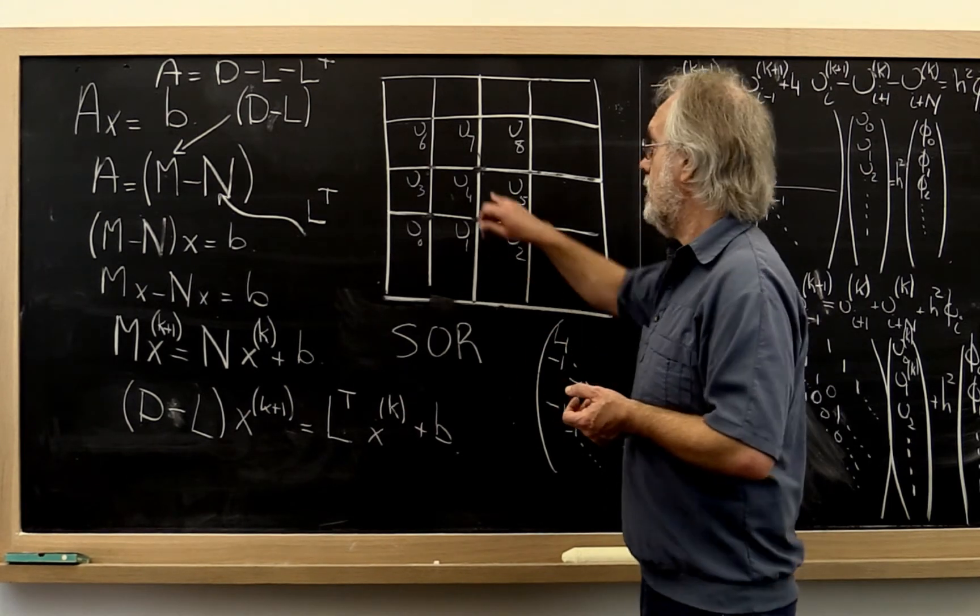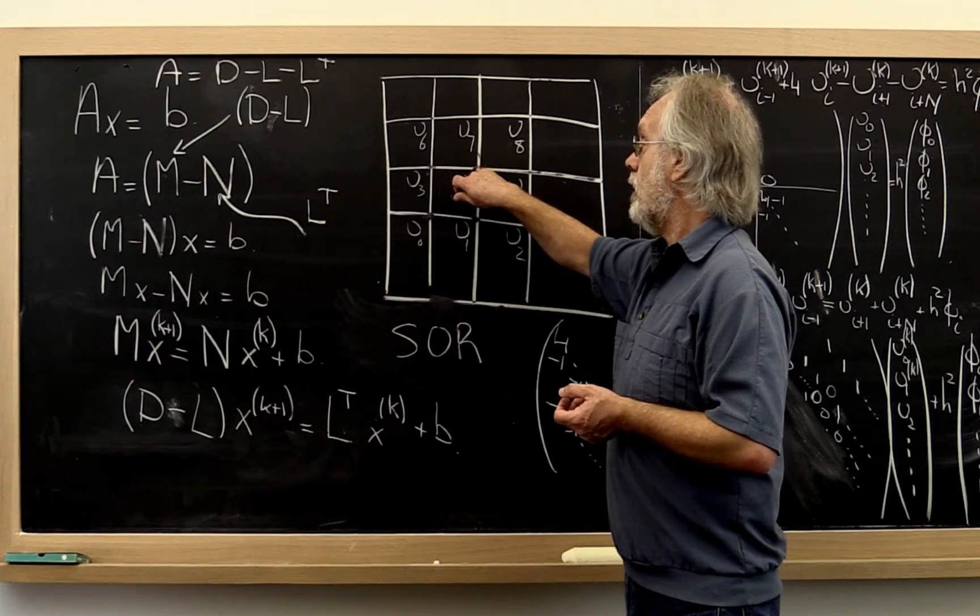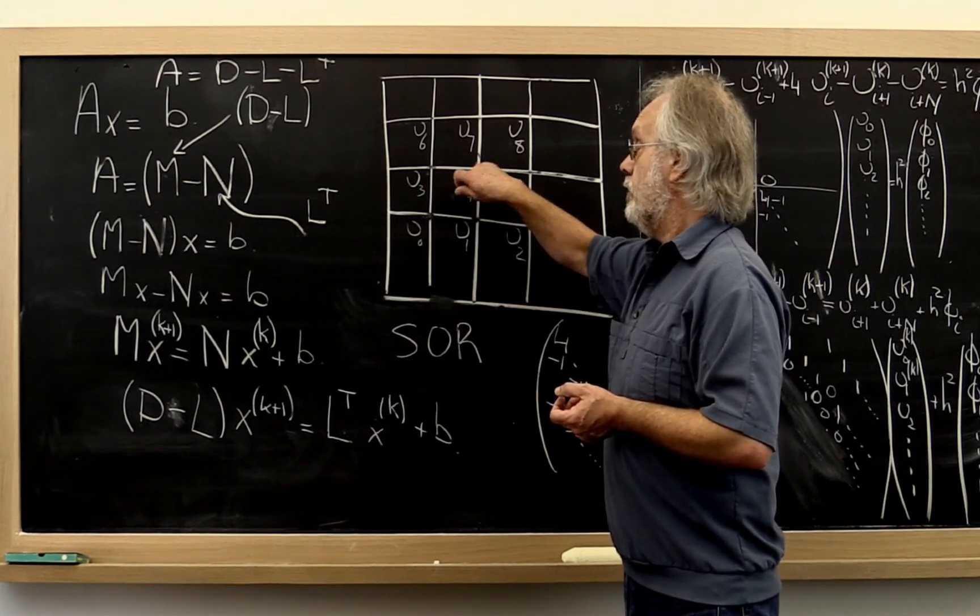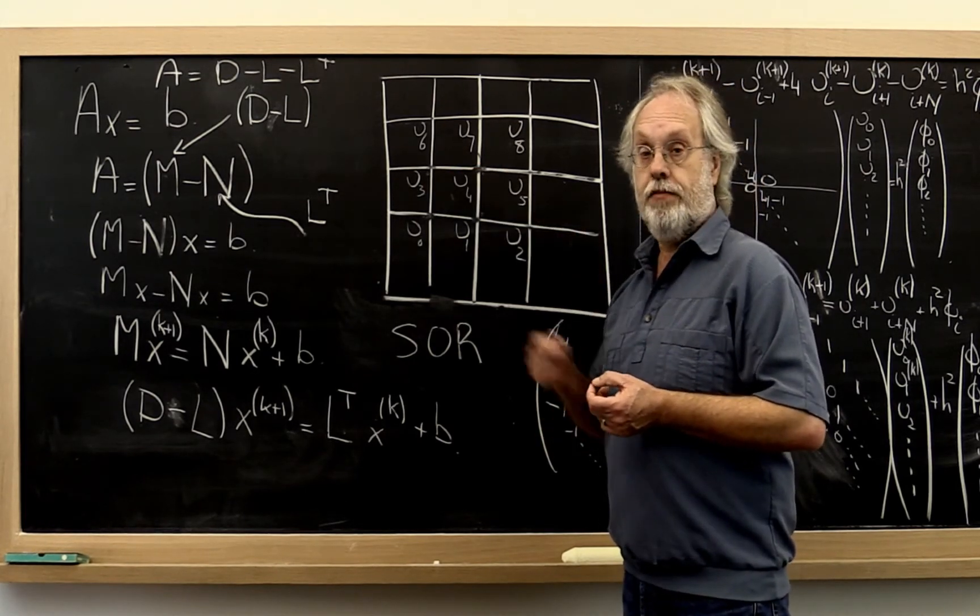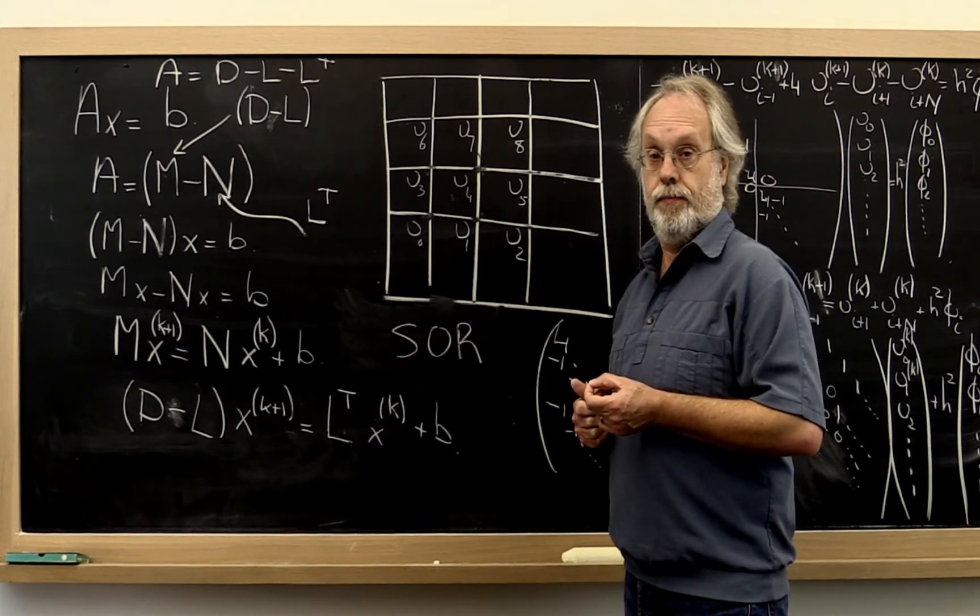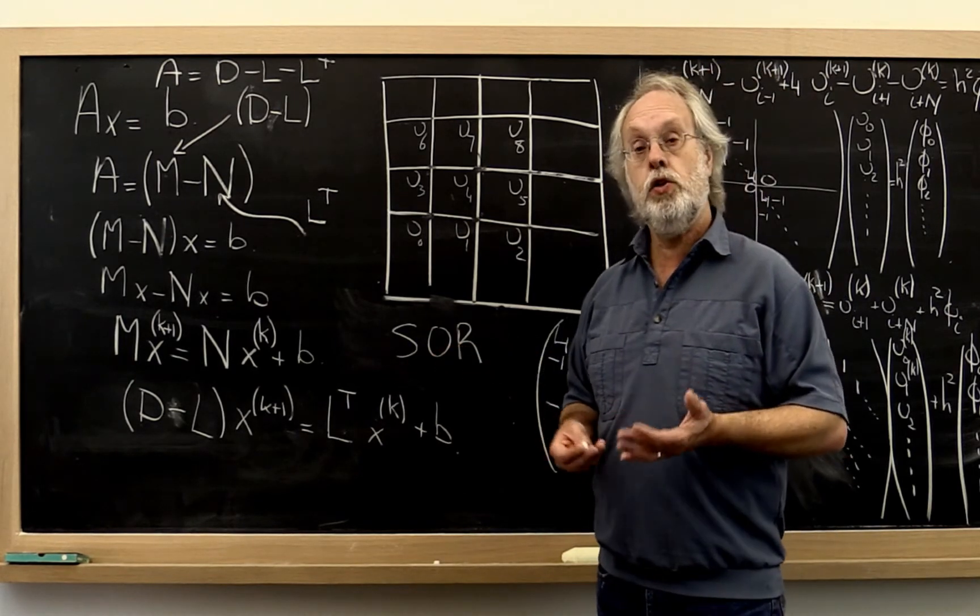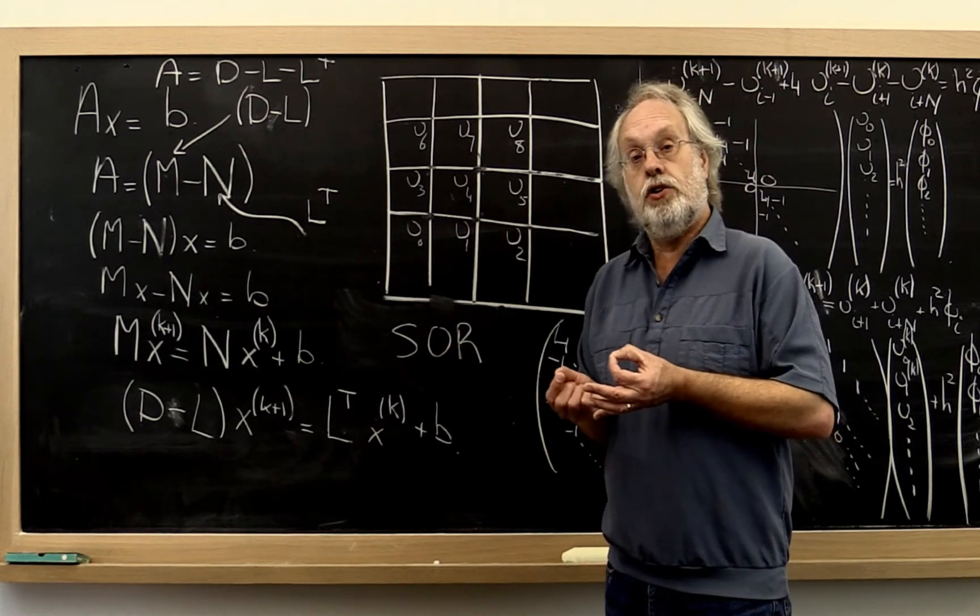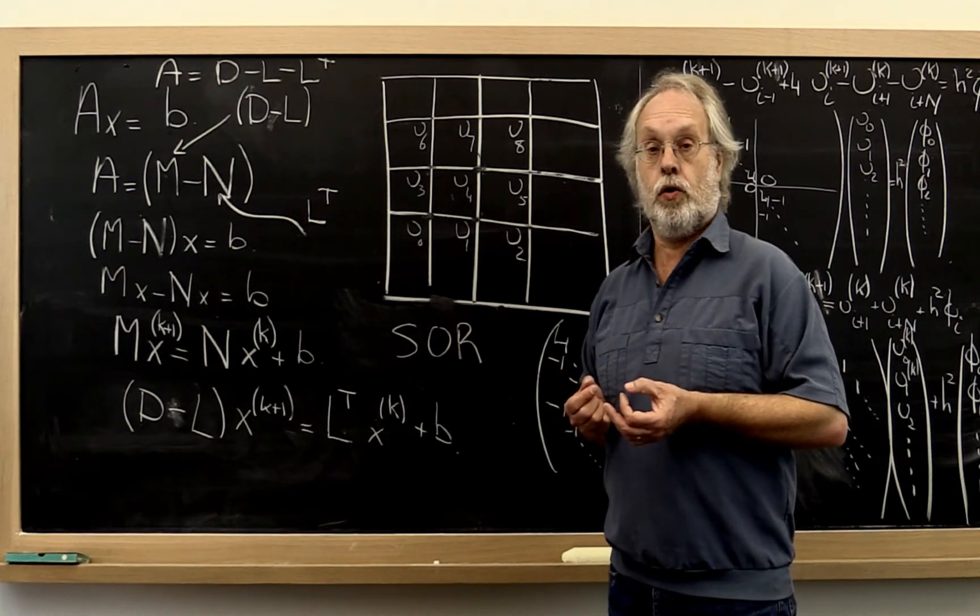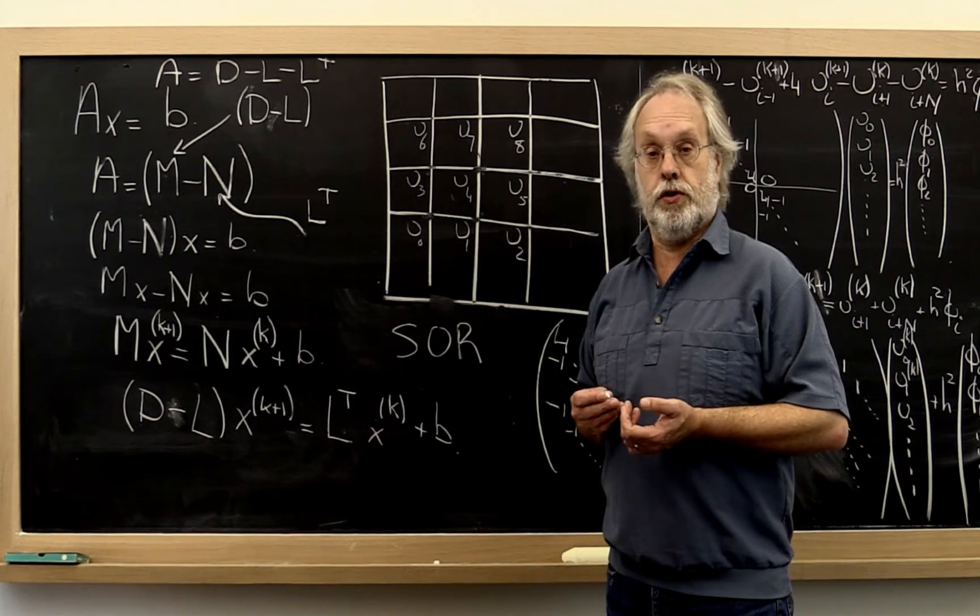So the idea is to take a linear combination of the old and new value, favoring the new value and going a little bit more in that direction. That's successive over-relaxation. When you pick the parameter that tells you how much further to go correctly, you actually do improve the convergence.